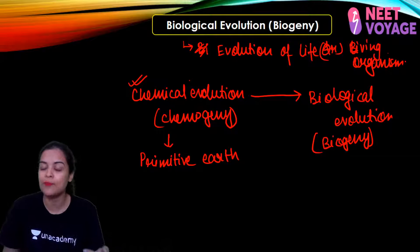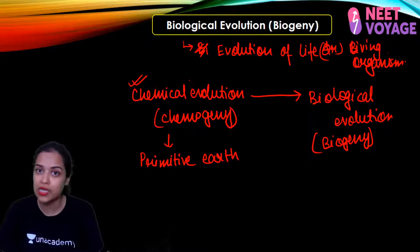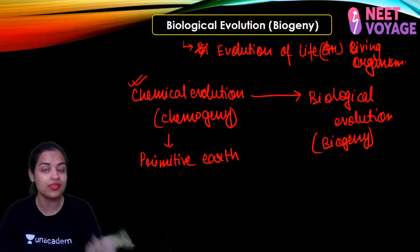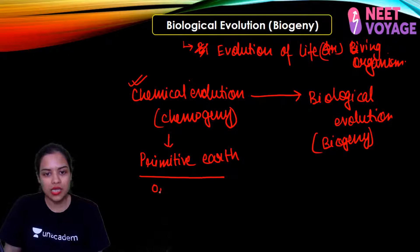Before studying biogeny, let me remind you: chemical evolution happened, and because of chemical evolution, biological evolution occurred. Is chemical evolution possible in the recent earth? Absolutely not. Last time we discussed the difference between recent atmosphere and primitive atmosphere — in primitive earth, chemical evolution was possible and the origin of life was possible. But now, it is not possible.